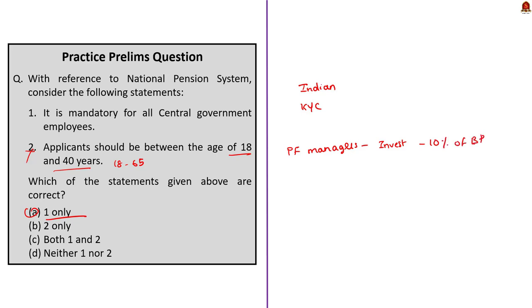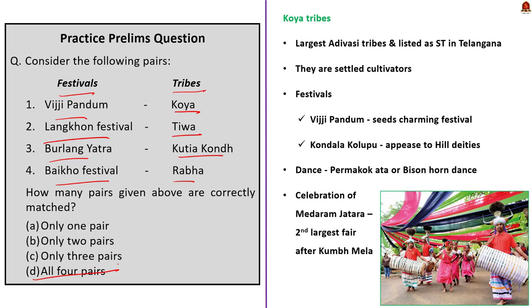The next question is about tribal festivals — a pair-based matching question. The pairs given are: 1. Vijipandam — Koya; 2. Lankone festival — Tharu; 3. Barlang Yatra — Kotiya Kondh; 4. Baiko festival — Rabha. All the given pairs are correct, so the correct answer is option D — all four pairs.